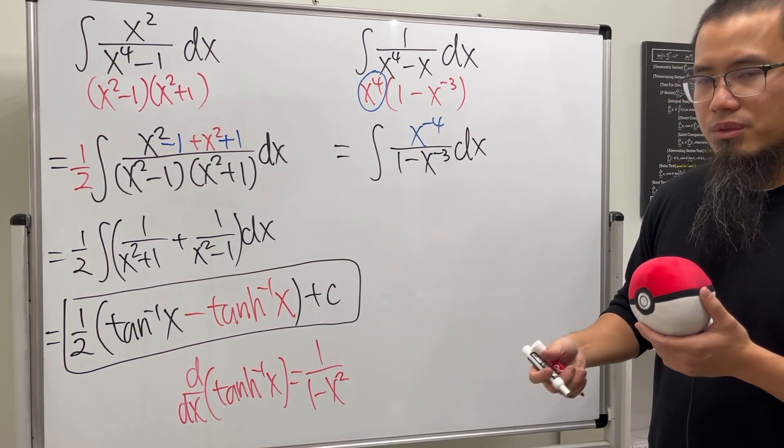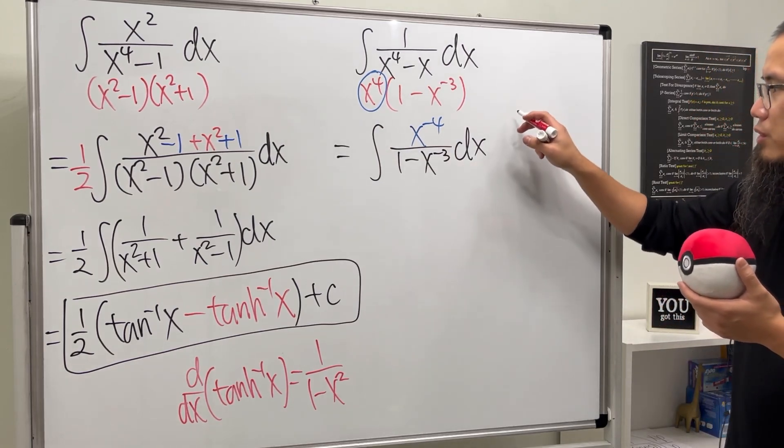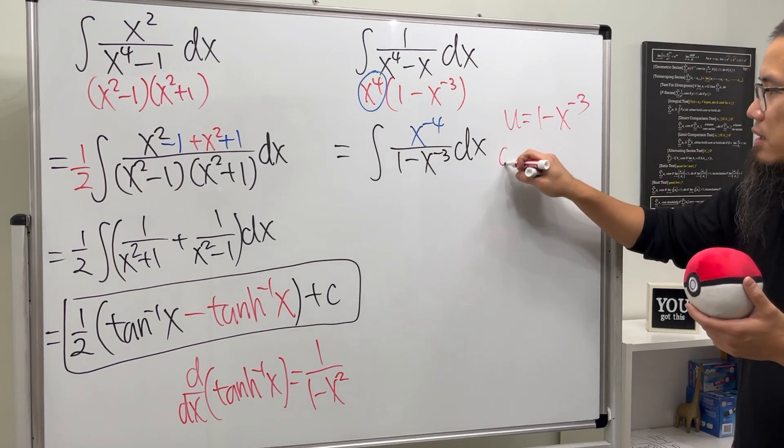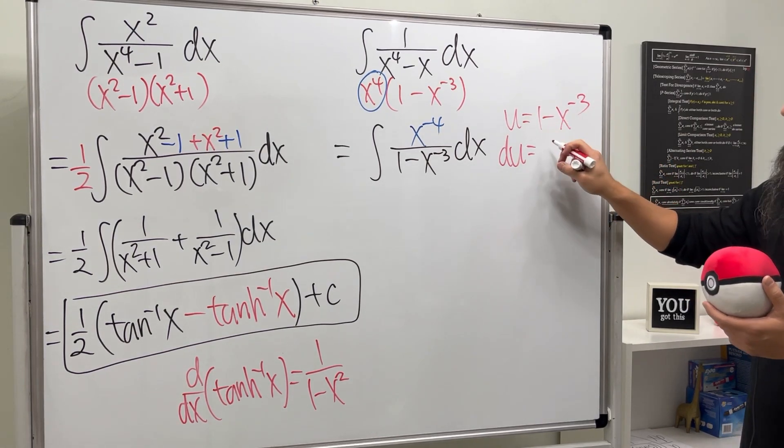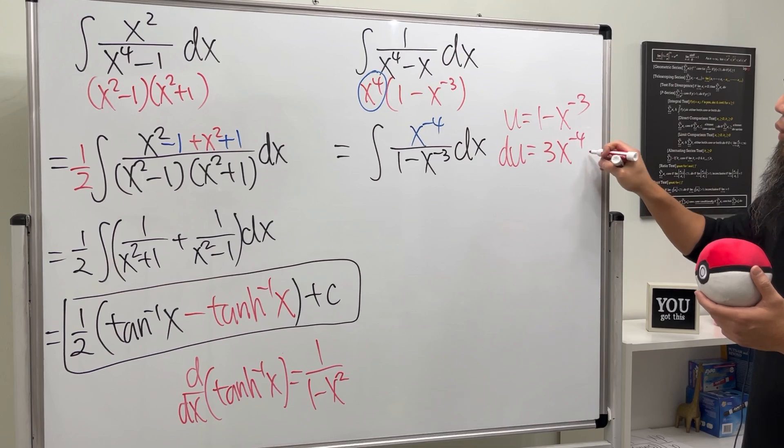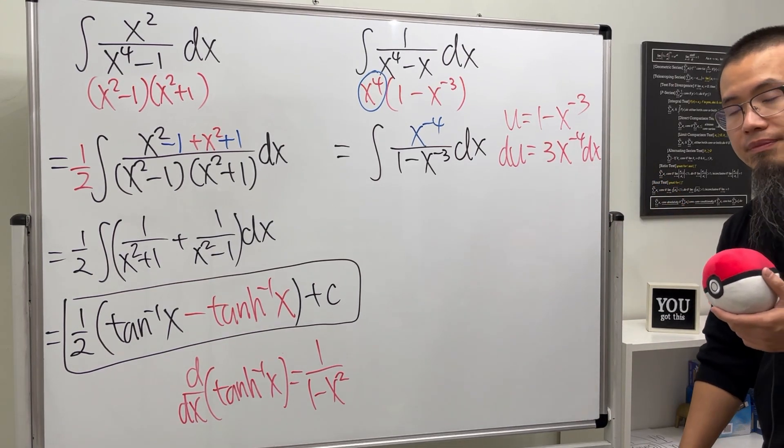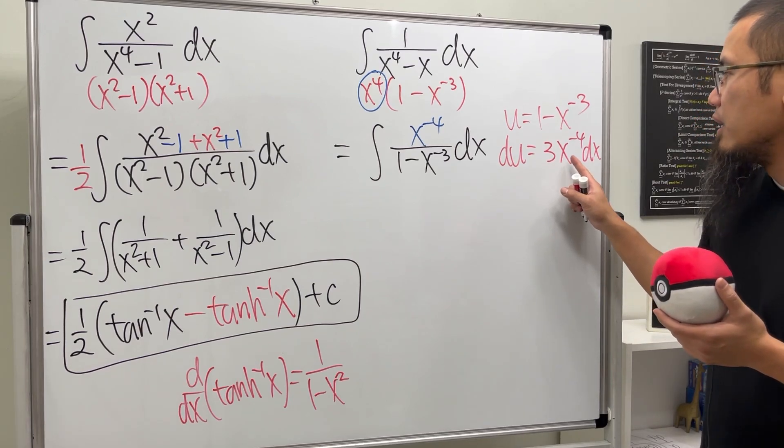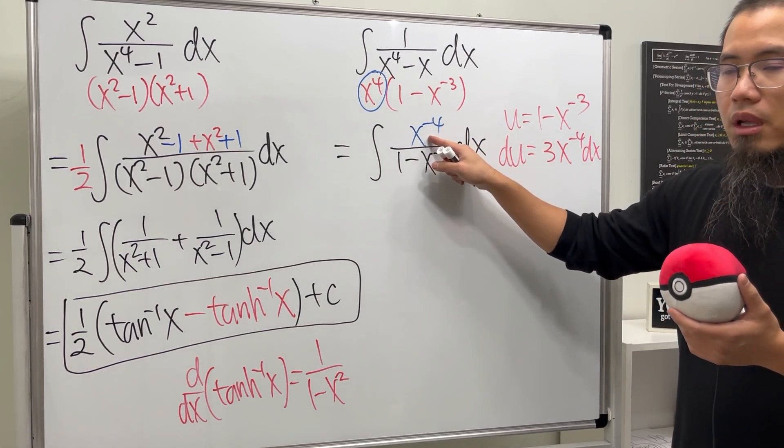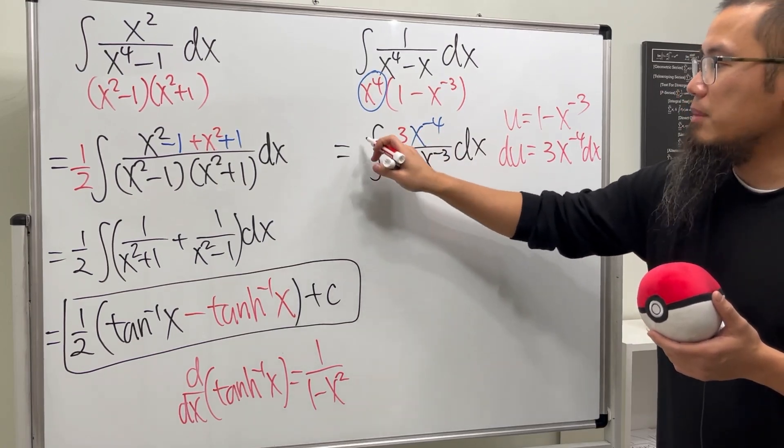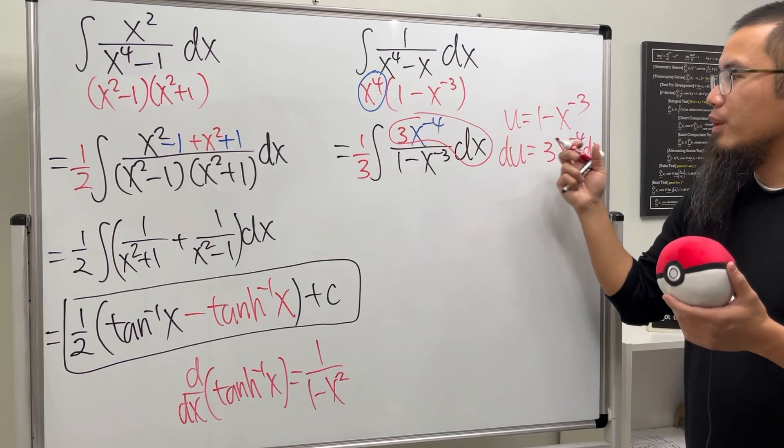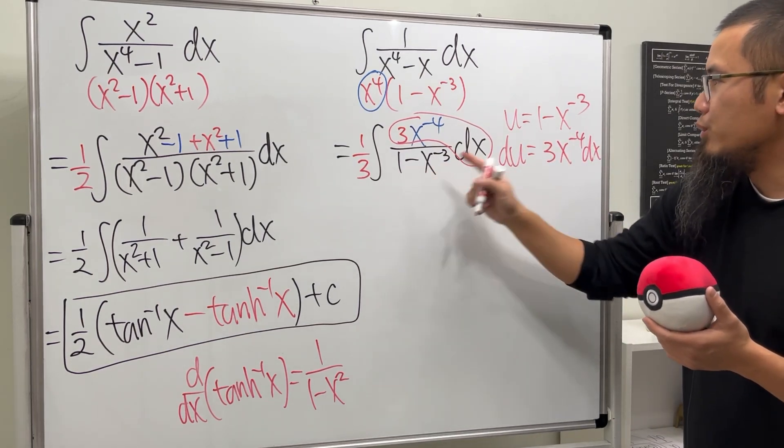What good does this do? Well, I can just do a u-sub that u equals the bottom, which is 1 - x⁻³, and then do the usual business. du equals positive 3x⁻⁴ dx. Usually, I tell people to isolate the dx, but check this out. This is x⁻⁴. Let's just multiply by 3, and then let's divide it by 3. Because this way, we get the du, and then we have the u on the bottom.